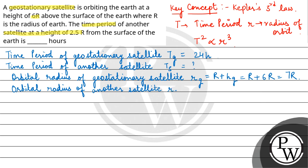Similarly, the orbital radius of another satellite, let's say RS, is R plus HS. The satellite height from the surface is given as 2.5R, so the total will be 3.5R.